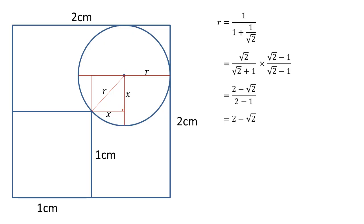Now we have our radius in a simple form, we can work out the area of the circle. The area is πr². So π times (2 - √2)². This equals π(4 - 4√2 + 2), which is π(6 - 4√2).